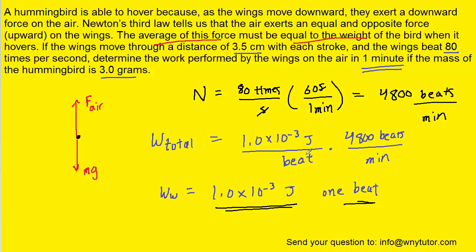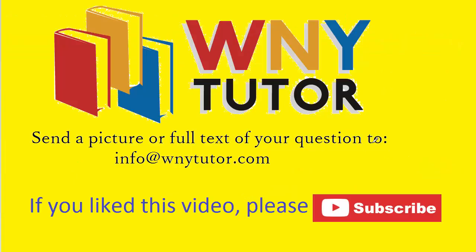So if we multiply the two values we've calculated so far, we can see that the beats will cancel out, and then we'll be left with 4.8 joules over minute. And what that essentially means is that the work done by the wings is 4.8 joules in the one minute that they were asking.